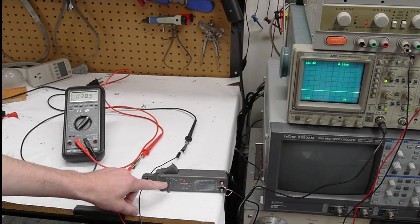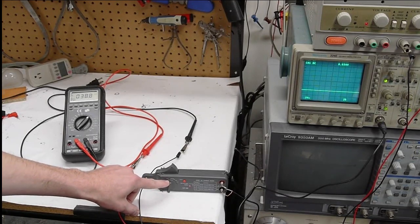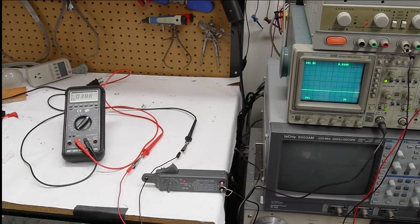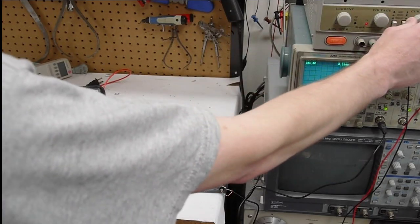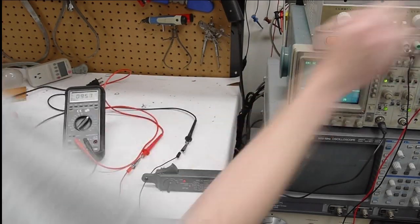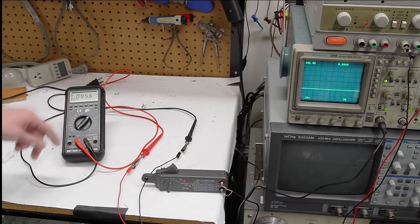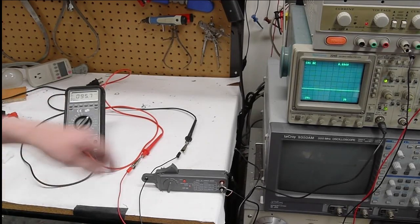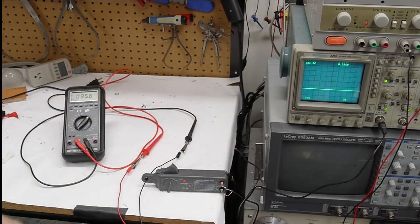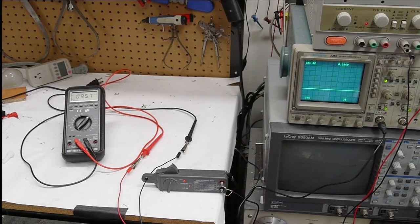So on its lowest scale, 400 milliamp scale, it's 1 millivolt per milliamp. So let's crank the power up a little bit. Now we've got 96 milliamps flowing. And perfect agreement there, 96 millivolts. Let's keep going.